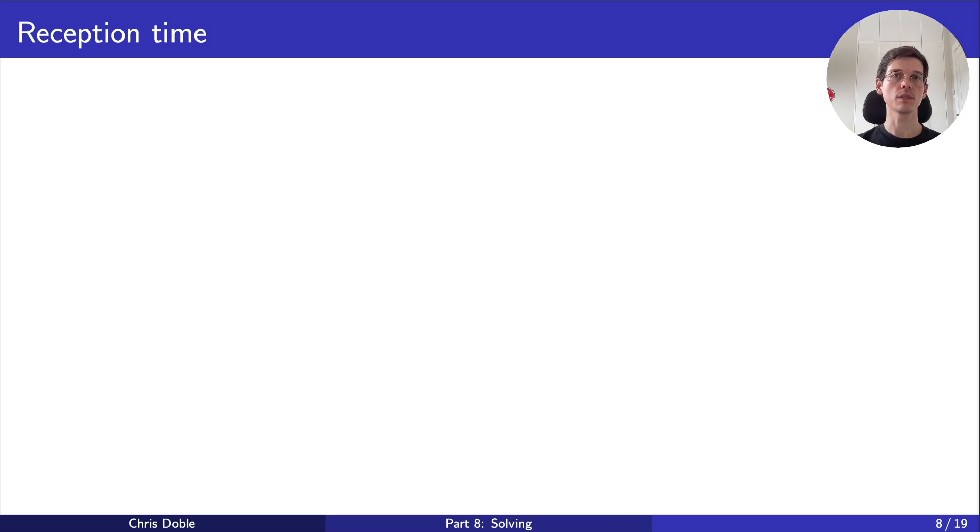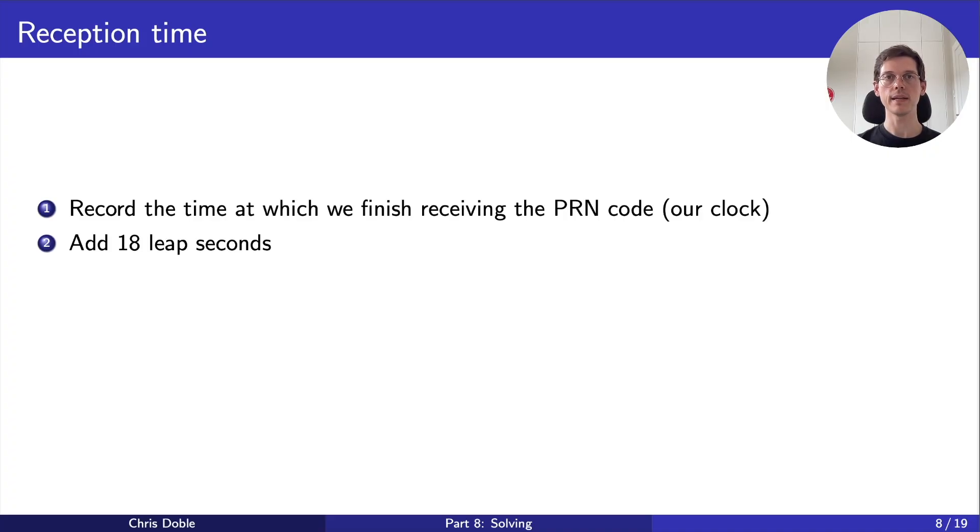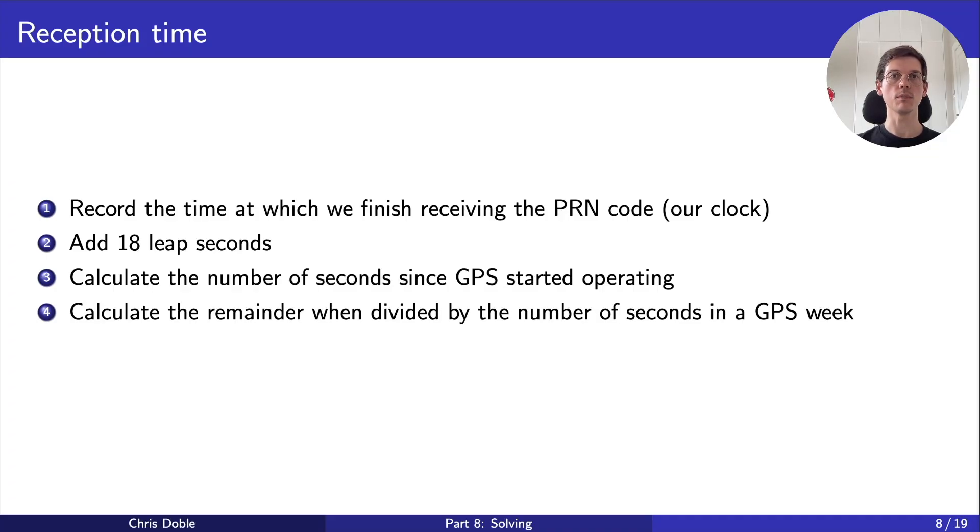Compared to the transmission time, calculating the reception time is pretty straightforward. We start by recording the time at which we finished receiving the PRN code, as shown on our clock. From here, we need to express it as a number of seconds since the start of the current GPS week. GPS time doesn't include leap seconds, but computers do, so the next thing we need to do is undo all 18 leap seconds that have occurred since GPS started operating. It's not strictly necessary to do this. If we didn't, the 18 seconds would just be absorbed into the clock bias, but it might make you wonder why your computer's clock is 18 seconds different from the satellite's. We calculate the number of seconds that have occurred since GPS started operating. And finally, we calculate the remainder of this value when it's divided by the number of seconds in a GPS week. This tells us how many seconds have passed since the start of the current GPS week.